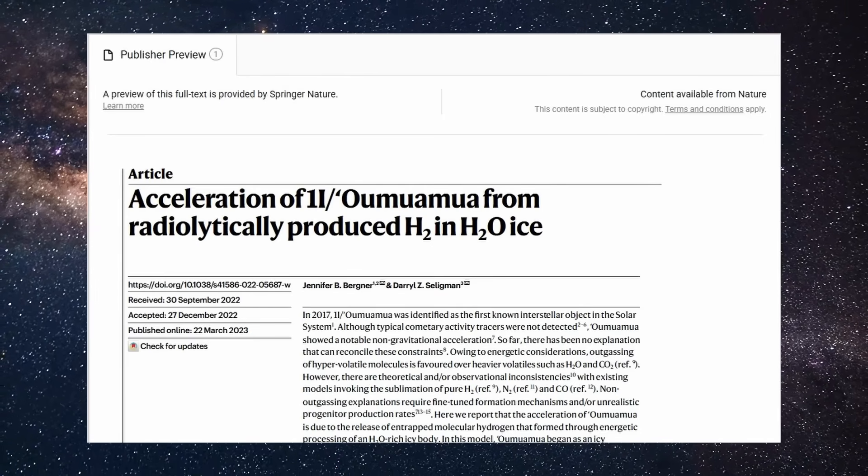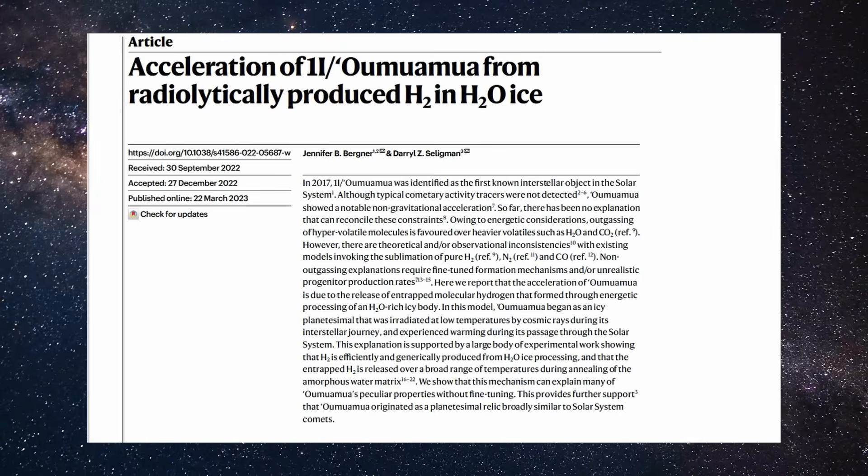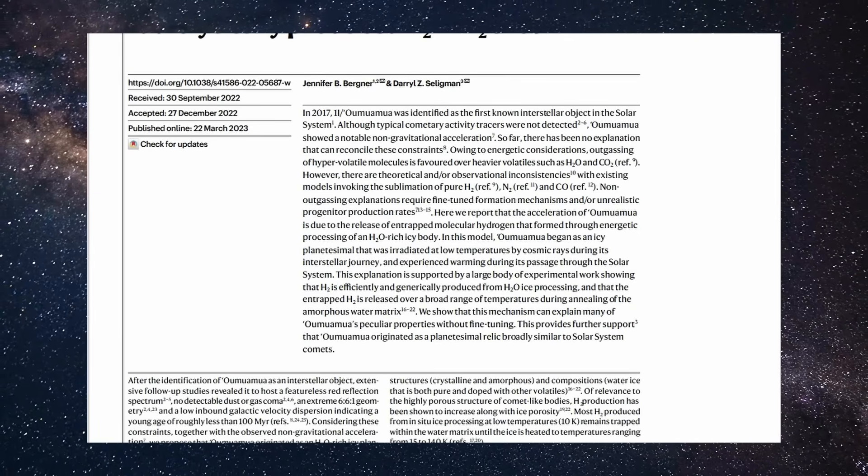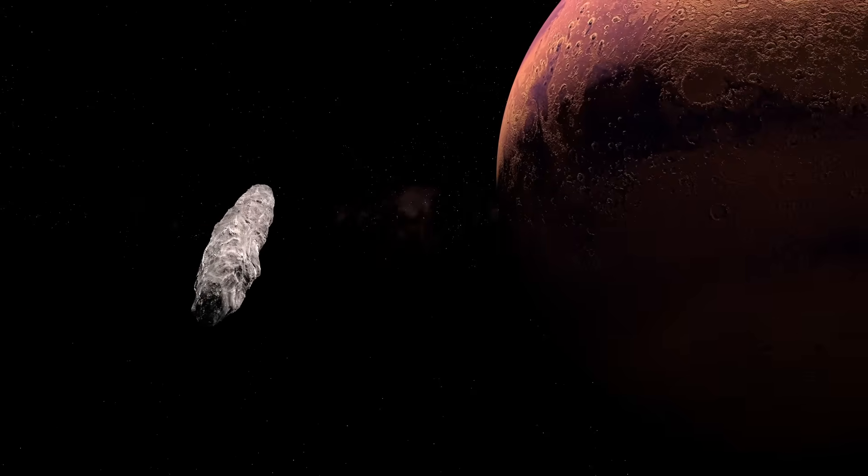Their new theory: Al-Muamua wasn't a comet, asteroid, or alien craft. It was something new altogether. A dark comet. One with invisible outgassing, no tail, and no dust. A hidden force. A hidden category.